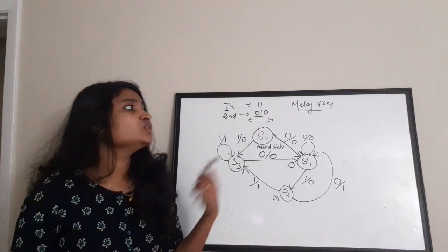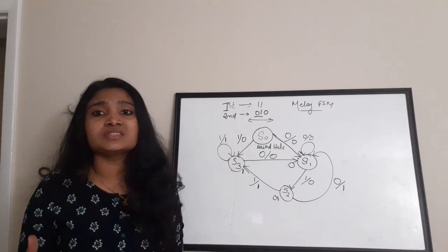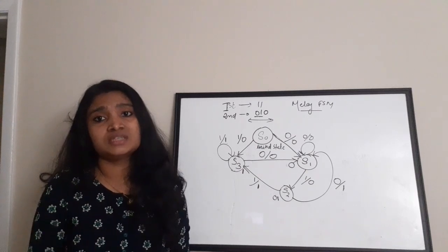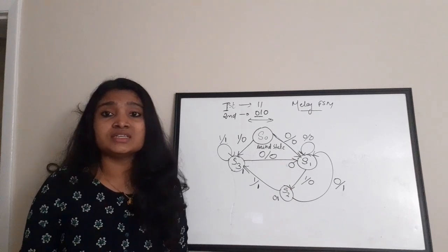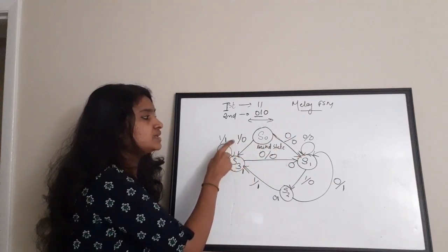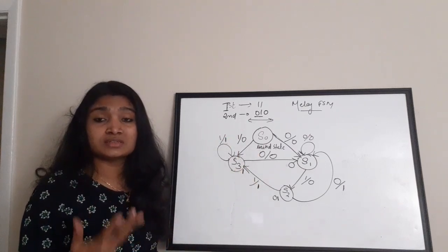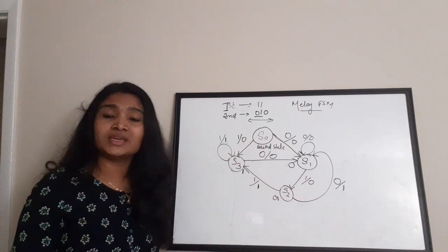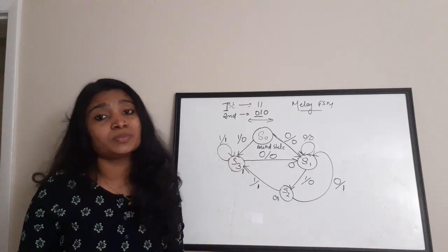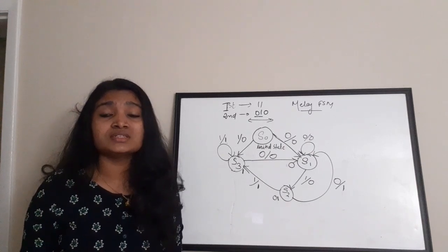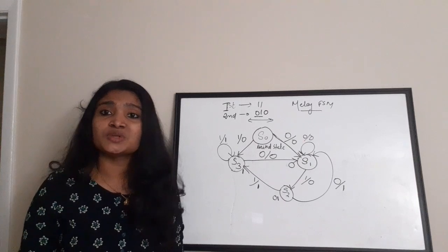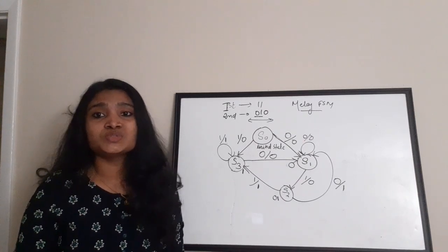A key difference between Mealy and Moore FSMs: for Mealy, the number of states equals the number of bits n; for Moore, the number of states equals n plus 1. Also, Mealy uses input/output notation on transitions, while Moore assigns output to each state. If you found this useful, please give a thumbs up, share with friends, and subscribe for more videos.